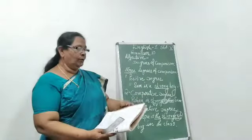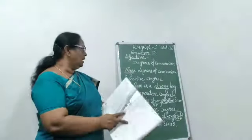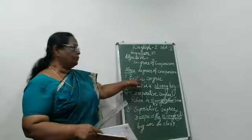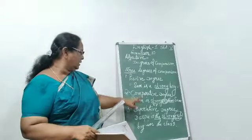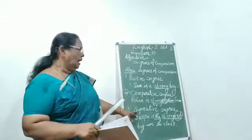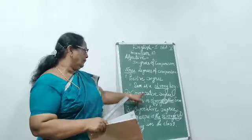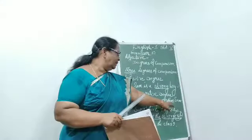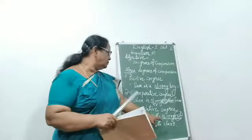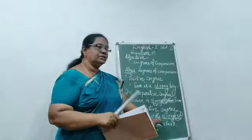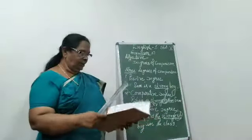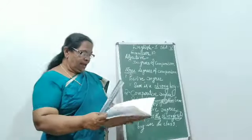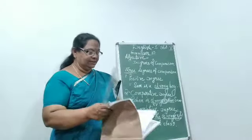So, there are three forms of adjectives of comparison. First: positive degree. Second: comparative degree. Third: superlative degree. For comparative forms we use 'er' and 'than'. For superlative forms we use 'the' and 'est'. Read your textbook and do the exercises given there.